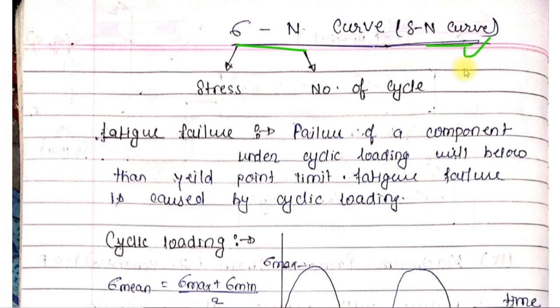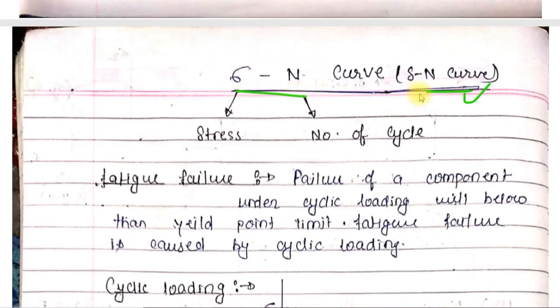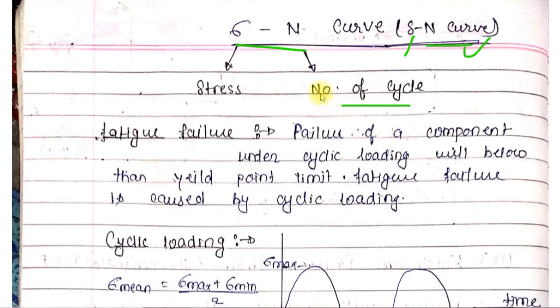Now let's start today's topic. This name sigma-N curve or S-N curve - from the name you can understand that this curve is plotted between stress and number of cycles. You should have the idea that this curve is formed between stress and number of cycles.